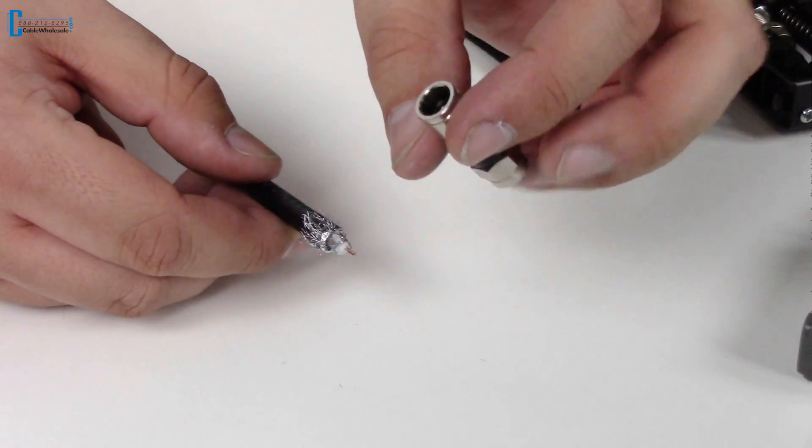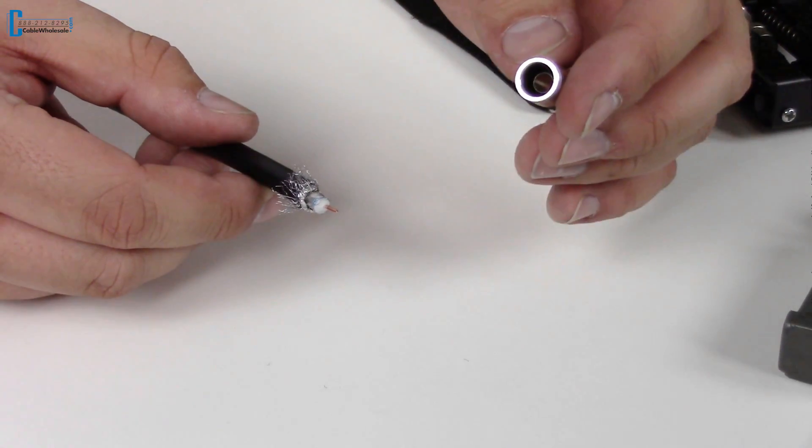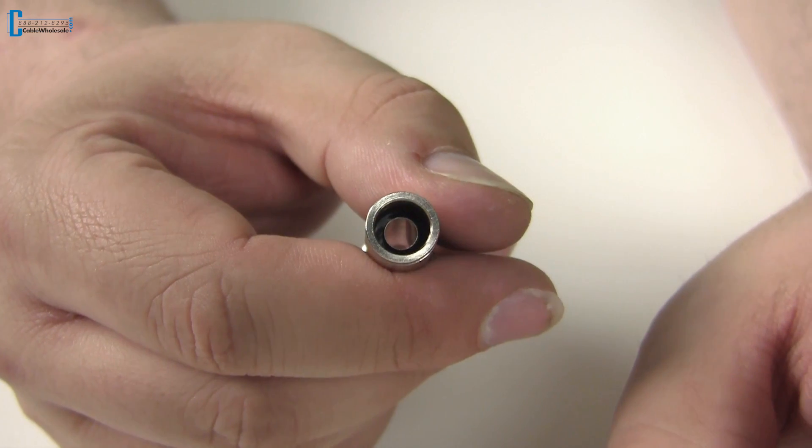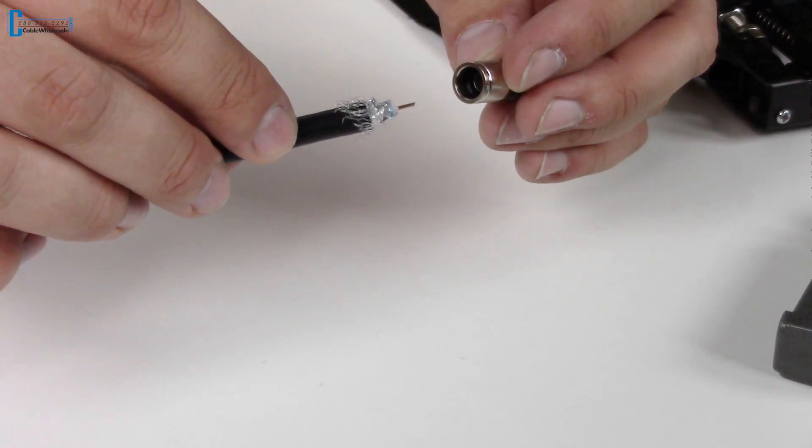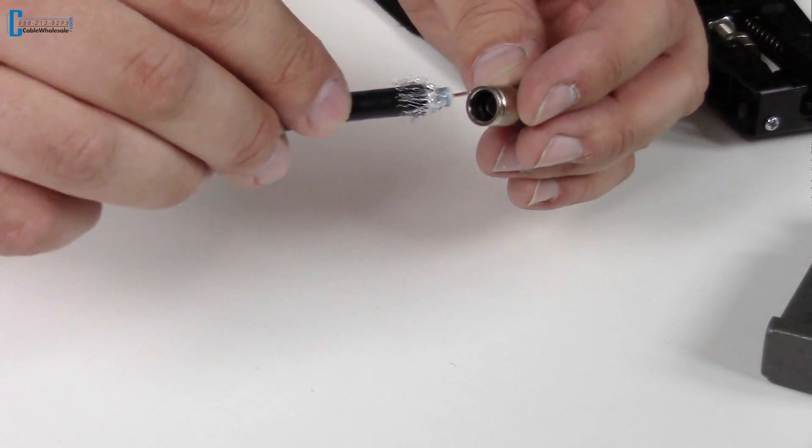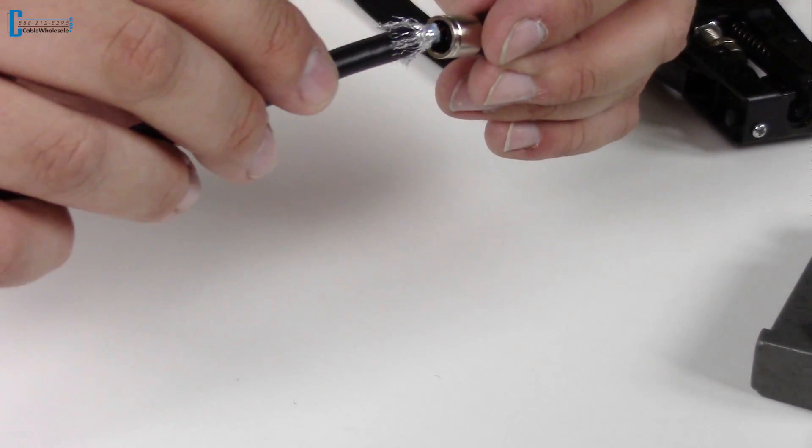Okay, we'll take a look at the F-pin connector here. Look at both sides. So, this is the side we're going to insert into. The small inner circle, we're going to push that and the outer jacket of the cable is going to go between the inner circle here and the outer circle here.